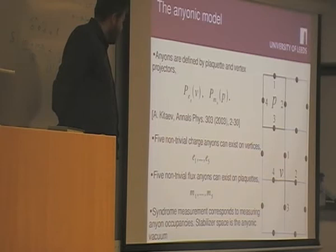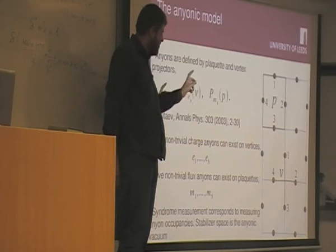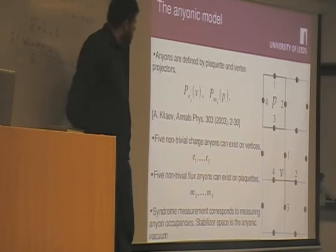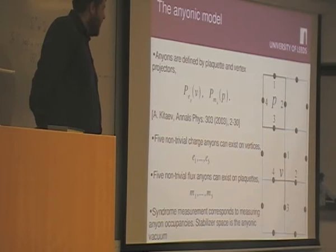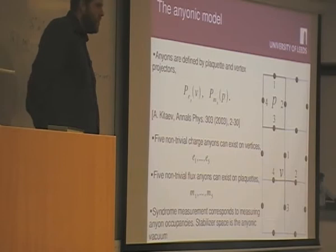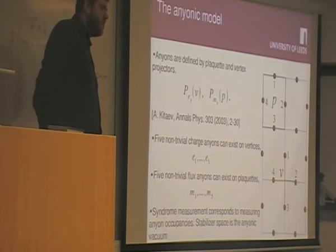On this particular model, anyons can exist on plaquettes and on vertices. On vertices, there are five types of anyons which we call E1, E2, E3, E4, E5. And on plaquettes, there is also five types of anyons which we call M1 through M5. And we define these in terms of projections onto the four spins around this plaquette and vertex. The syndrome measurements correspond to just looking at every plaquette and every vertex to see whether there's an anyon there or not, if there is, what type of anyon there is there. And if there's no anyons anywhere, then your quantum information is being protected.